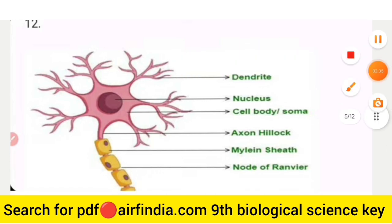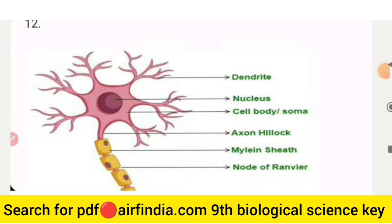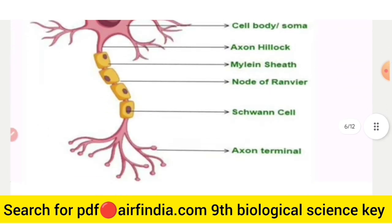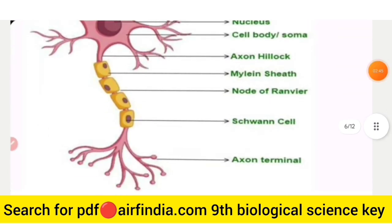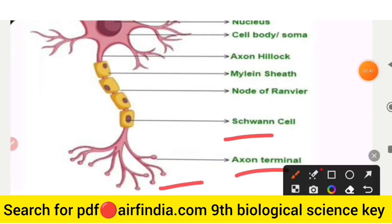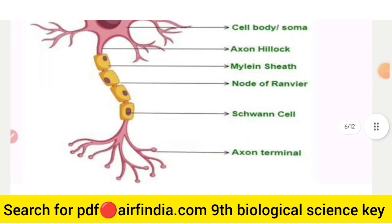Question number 12 is a diagram. The labeled parts are: dendrite, nucleus, cell body (soma), axon, myelin sheath, node of Ranvier, axon terminal, and Schwann cell.